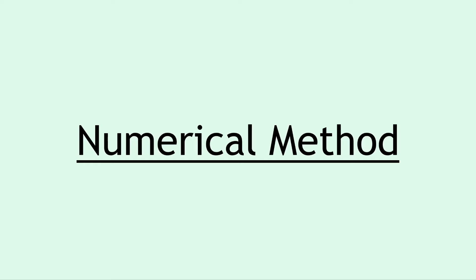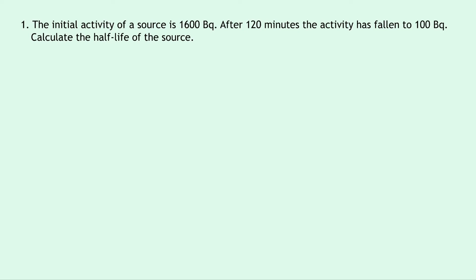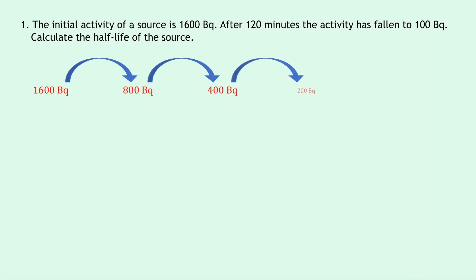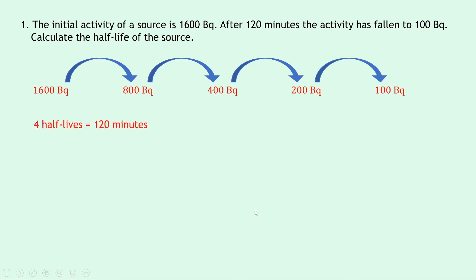We're now going to do four worked examples for the numerical method, showing how to find the half-life, the final activity, and the initial activity. Question 1: the initial activity of a source is 1,600 becquerels; after 120 minutes the activity has fallen to 100 becquerels. Calculate the half-life. We halve 1,600 → 800 → 400 → 200 → 100 becquerels, giving us 4 half-lives in 120 minutes. So 1 half-life equals 120 ÷ 4 = 30 minutes.